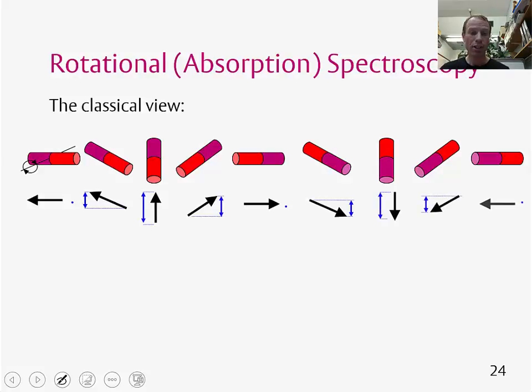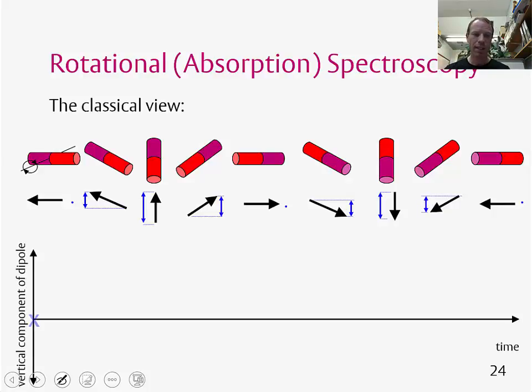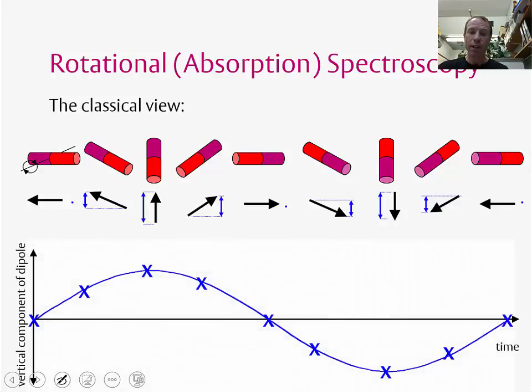If we think about the vertical component of this dipole moment and plot this as a function of time, it looks something like this. It increases to a maximum, decreases to zero, goes negative, and then comes back to zero, so it forms a wave. Now if we remember that light has an oscillating electric field which goes up and down, this oscillating electric field from light will interact with the oscillating vertical component of a dipole moment, which allows spectroscopy to occur.